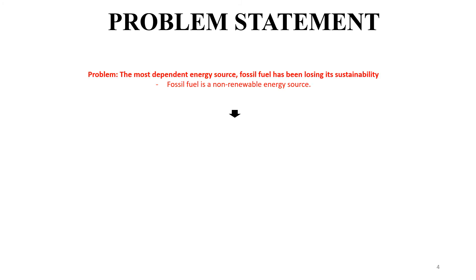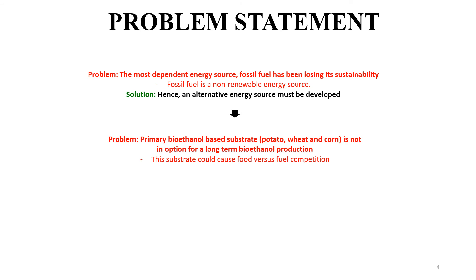As for the problem statement, the initial problem identified was the undeniable dependency on the depleting energy source fossil fuel. Hence, an alternative energy source was sought and bioethanol was developed. Bioethanol is a suitable alternative as it is a clean, renewable energy. However, a follow-up problem arose when bioethanol was produced from food crops such as potato, wheat, and corn, because primary bioethanol caused food versus fuel competition.